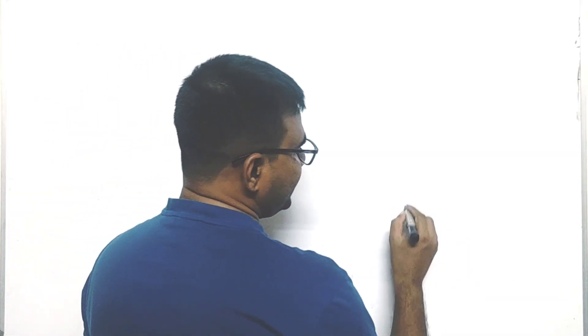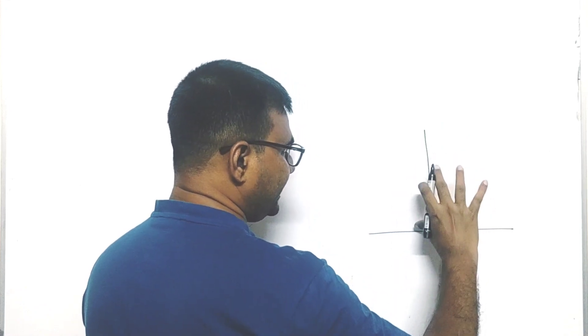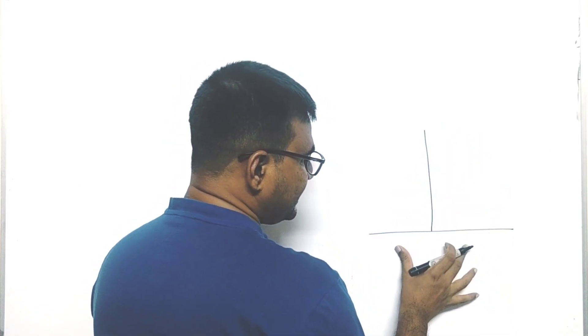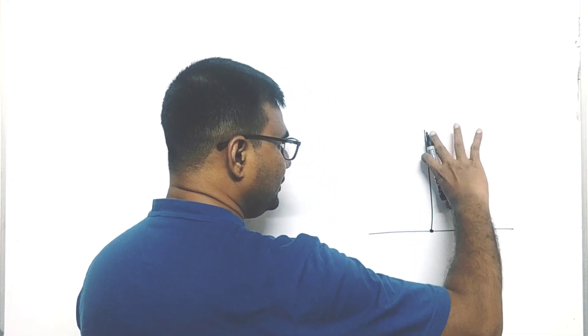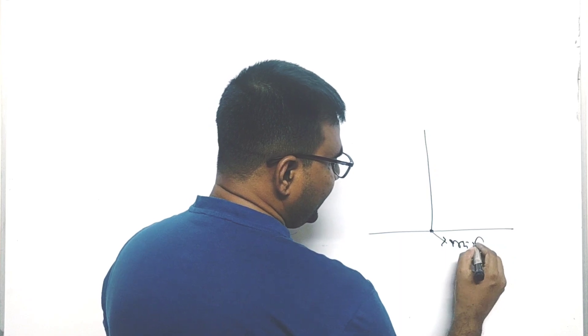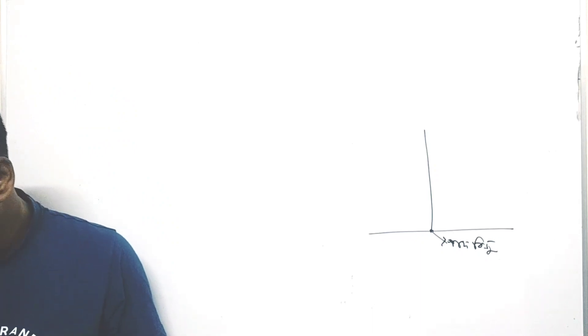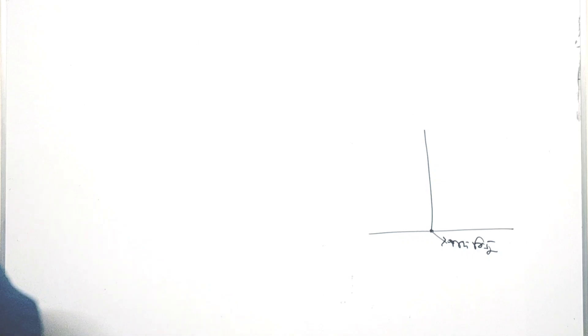Today's topic is finding the foot of perpendicular. The first thing we need to know is what the foot of perpendicular is — it is the point on the line (the base/ground) where the perpendicular meets. Let's understand this concept step by step.